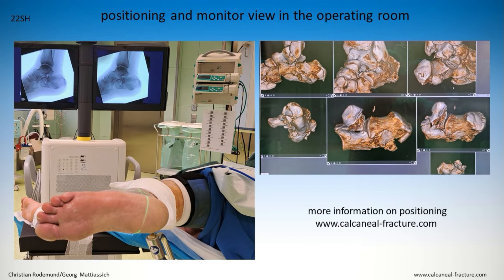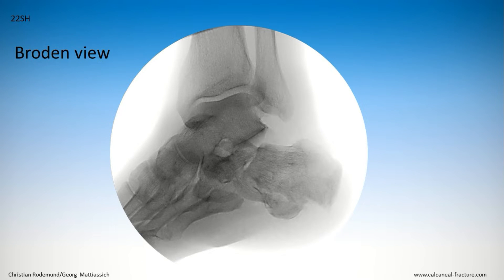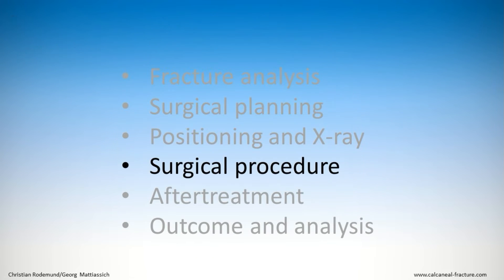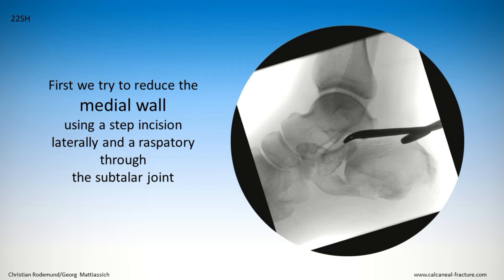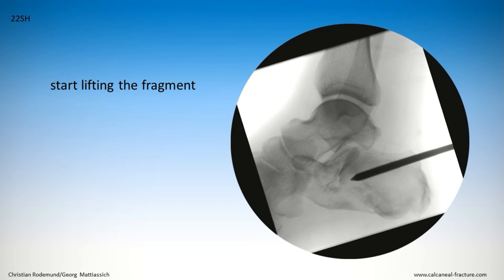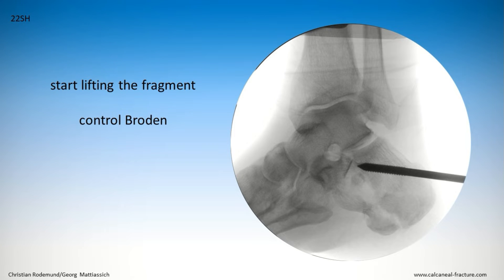Surgery was performed using our standardized positioning, ensuring free access to the foot and easy capture of standard X-ray views: lateral, mortise, and axial. Our first target was to reduce the medial wall. We attempted this using a step incision laterally and with a retractor through the subtalar joint. For reduction of the tongue-type fragment, we positioned a Schanz screw into the tongue fragment and started lifting the fragment, controlling in lateral and mortise view.